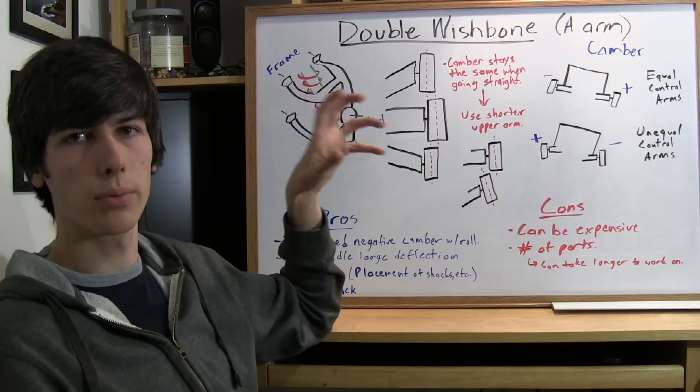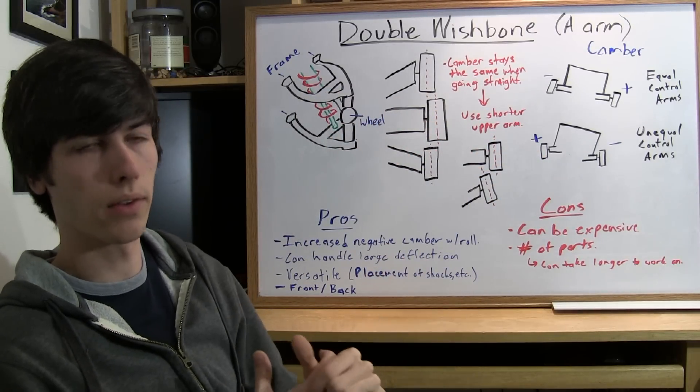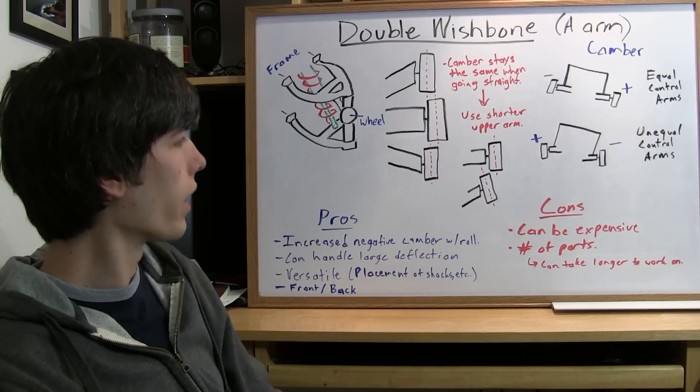So you can use a double wishbone suspension in both the front of the car, even with the steering, and in the rear of the car. So that's another advantage.